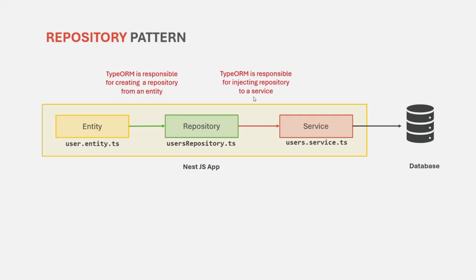Without a repository, the service will not be able to contact the database. A repository will be created using an entity. So let's first understand what an entity is. An entity is nothing but a class which defines what columns you want to have in a table in your database corresponding to that entity. For example, you create a user entity which is a user class, and in that class you specify the properties. TypeORM will then create a table with the same name in the database and it will also create columns in that table with the name of the properties.